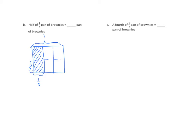I will bracket one-half and shade this going the opposite direction. If I look at my model, I have six equal parts — that's my denominator. How many parts are double-shaded? One out of the six. So the answer is one-sixth.